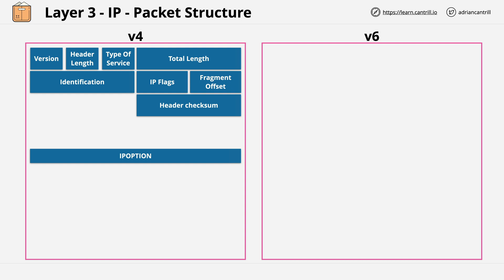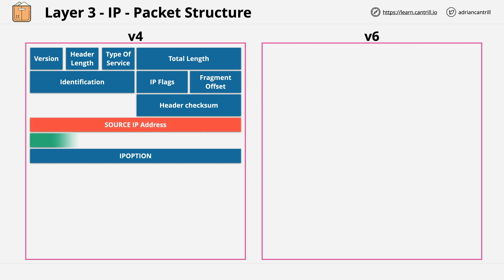Every packet has a source and destination IP address field. The source IP address is generally the device IP which generates the packet, and the destination IP address is the intended destination IP for the packet.